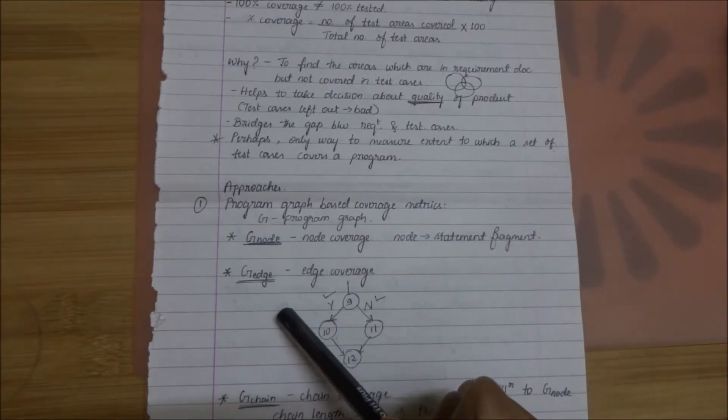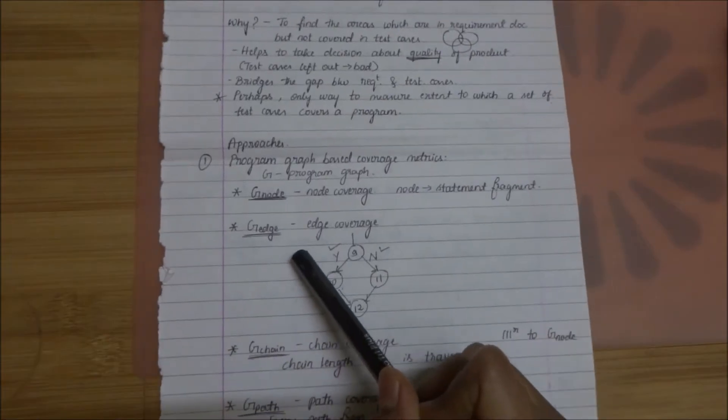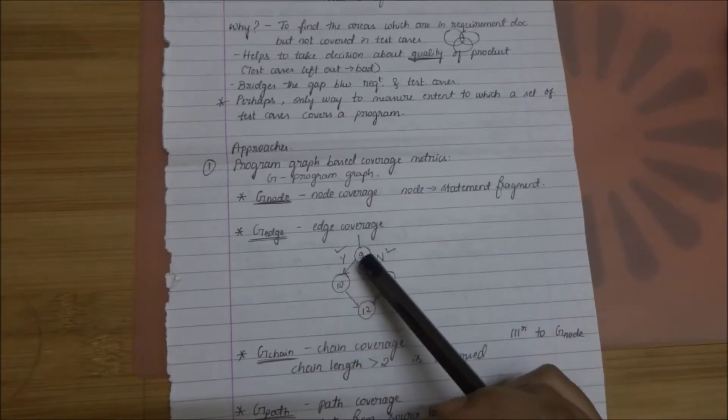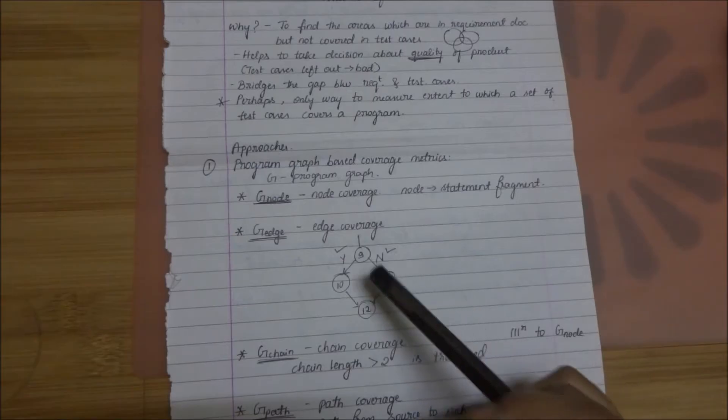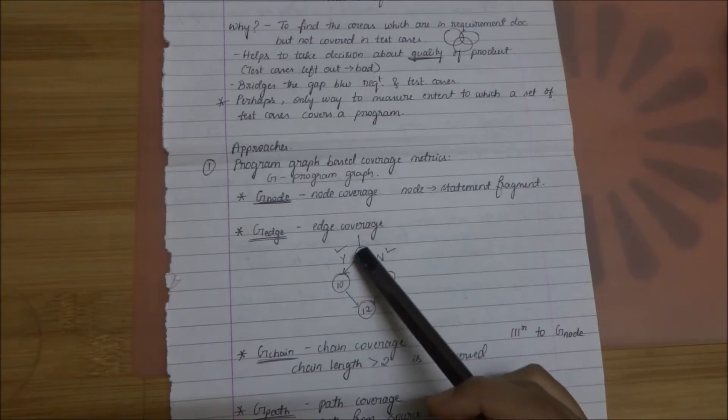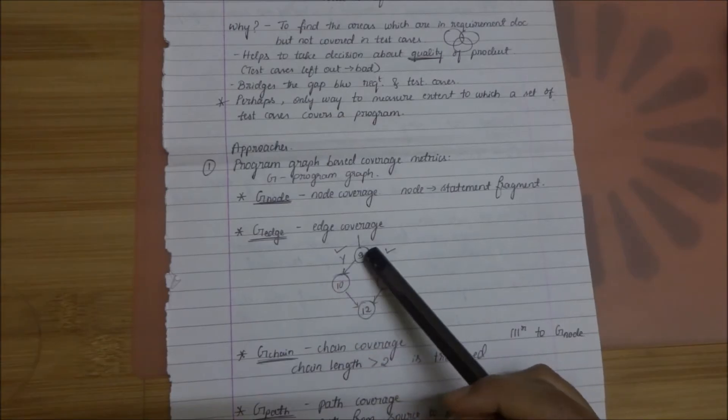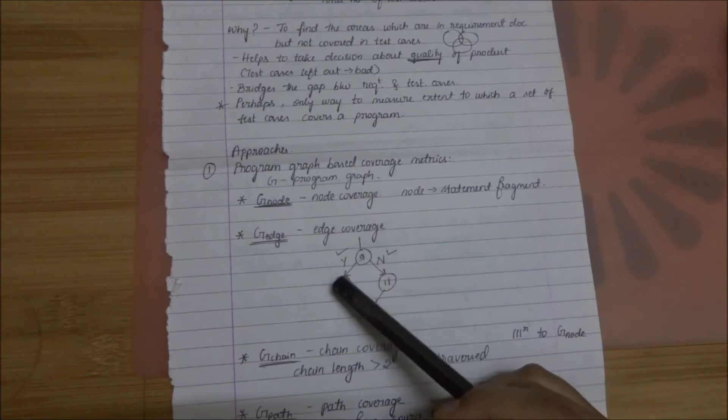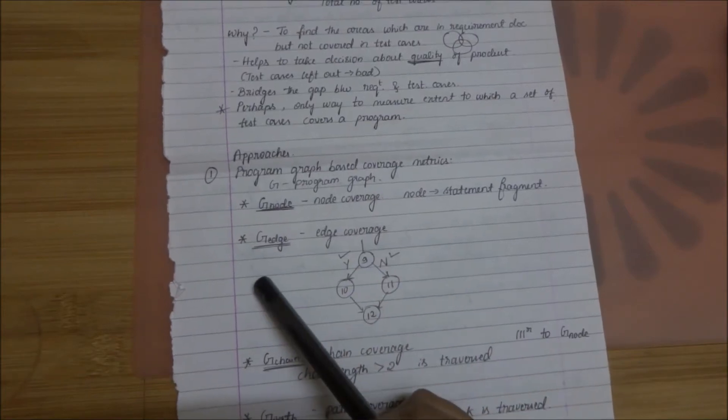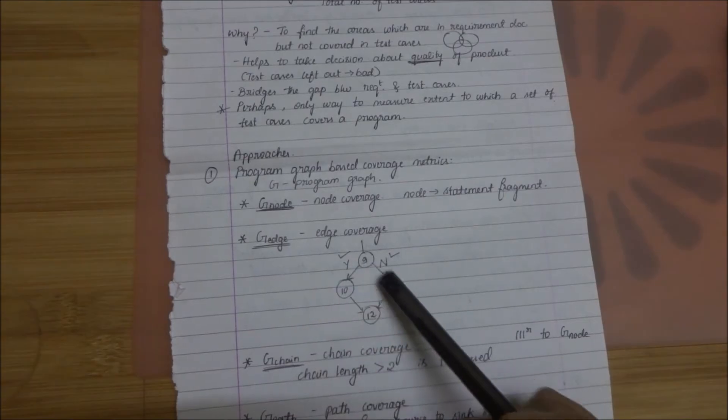The next one is G-edge. It stands for edge coverage. Now we can see in this diagram there are two edges. This represents an if-else statement. If the answer is true it goes here. If it's not then it goes here. So there are two edges. There are two possibilities. So G-edge is concerned with covering all the edges.